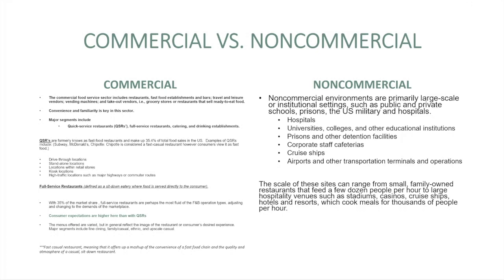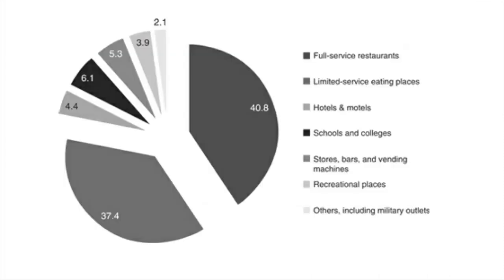It's important to know where you fall and how you're classified. Chipotle calls itself fast casual but consumers call it fast food — so where do you fall? Understanding this breakdown means that when you see a hotel or motel, you'll know that's not commercial. It helps you articulate yourself and understand what landscape you're operating in.